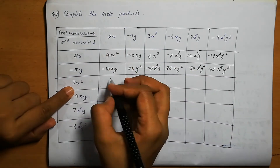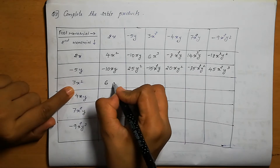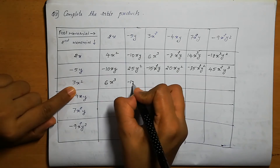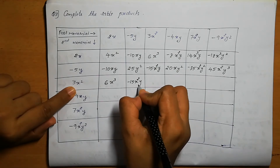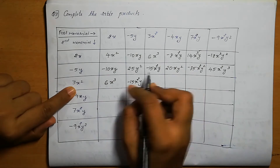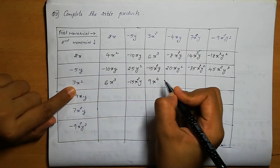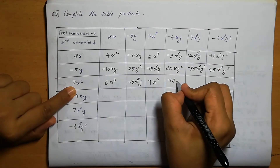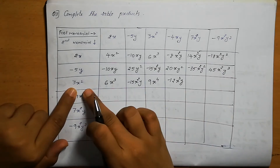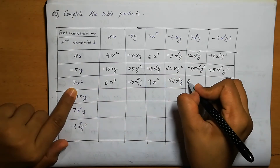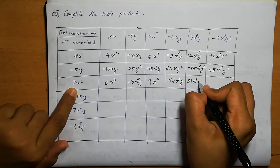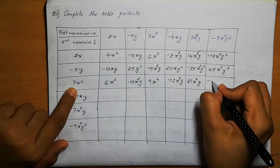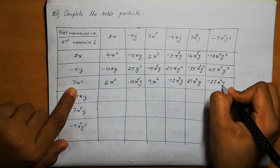Next: 3x square into 2x — 3 into 2 is 6, x square into x is x cube. 3x square into minus 5y is minus 15x square y. 3x square into 3x square is 9x power 4. 3x square into minus 4xy: minus 4 into 3 is minus 12, x square into xy is x cube y. 3x square into 7x square y: 3 into 7 is 21, x square into x square is x power 4, giving 21x power 4 y. 3x square into minus 9x square y square gives minus 27x power 4 y square.